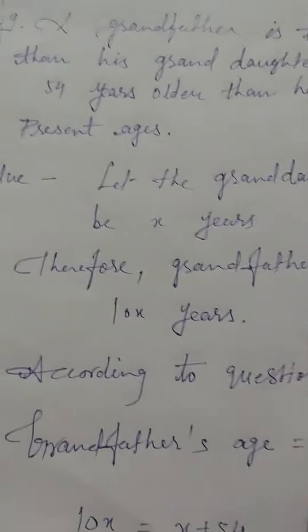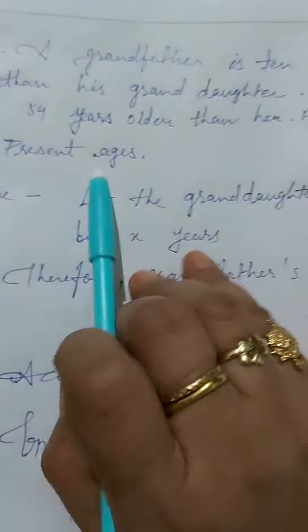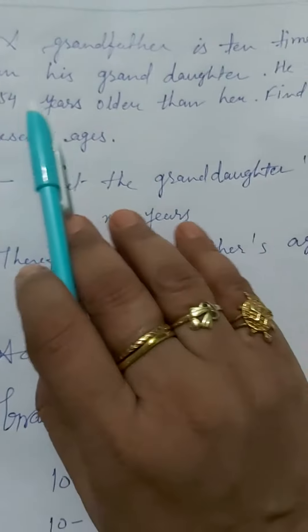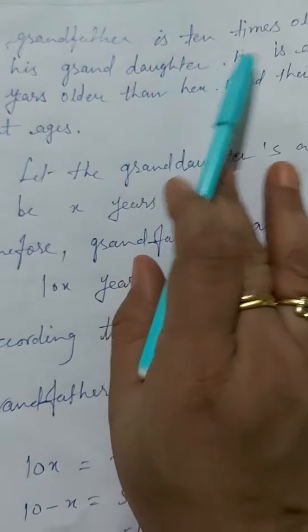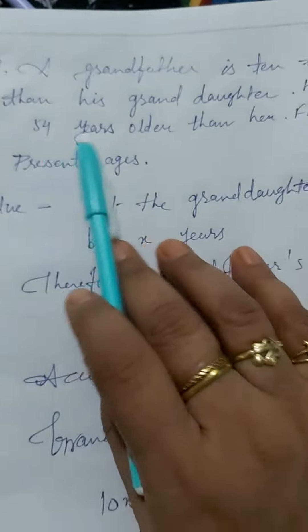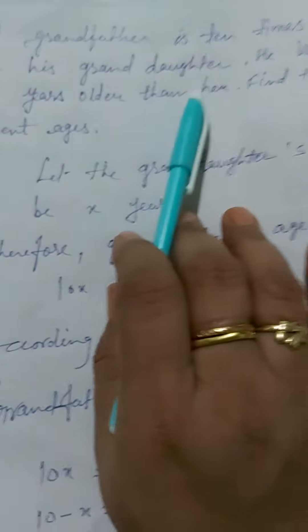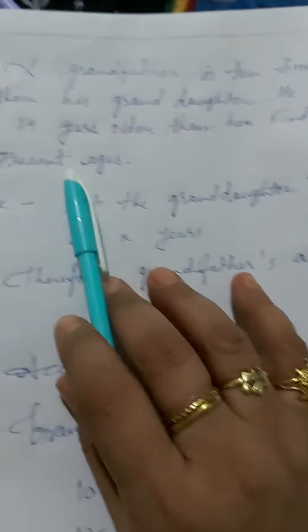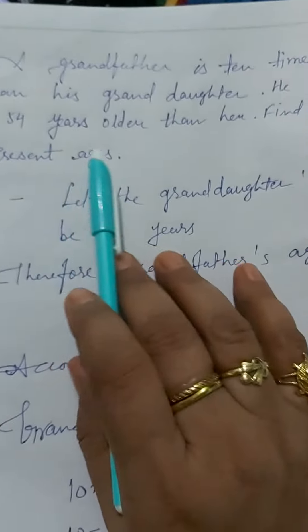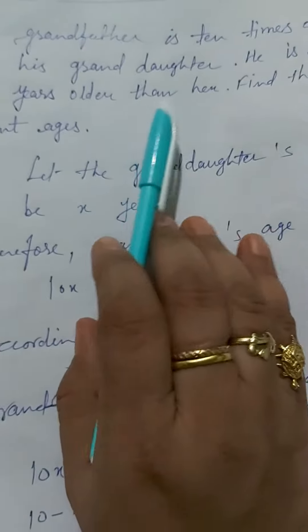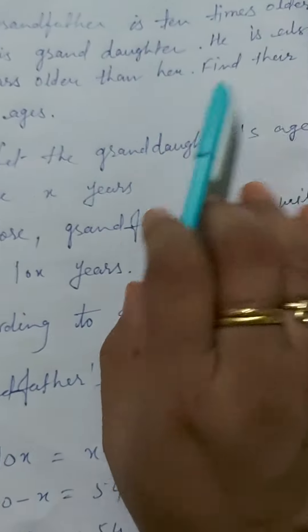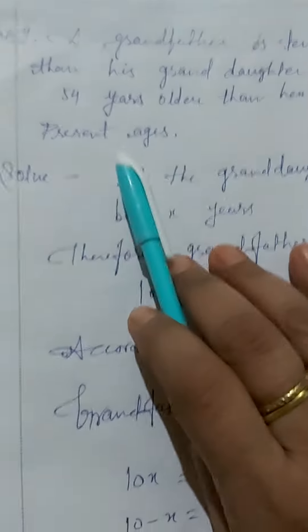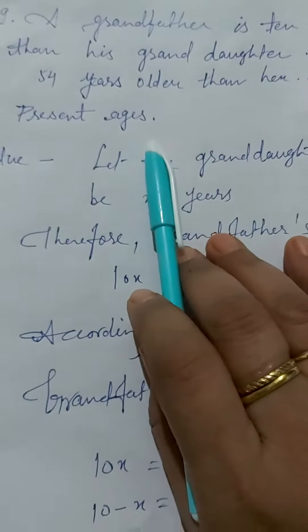Good morning, dear students. Let's see question number 9. Grandfather is 10 times older than his granddaughter. He is also 54 years older than her. Find their present ages.